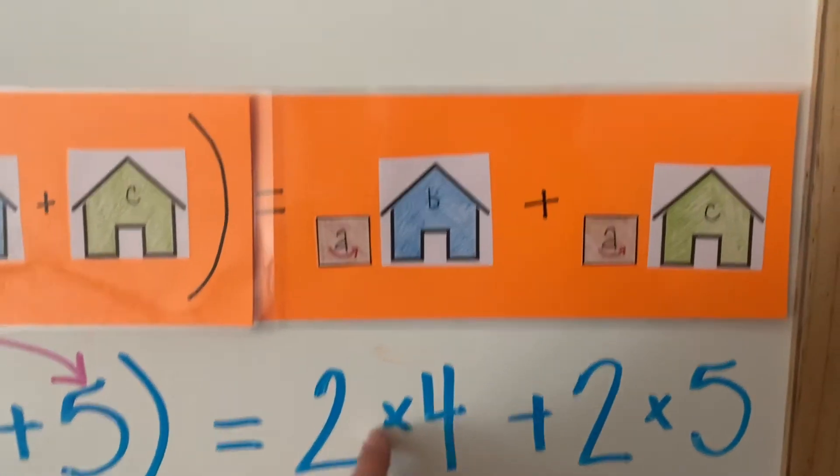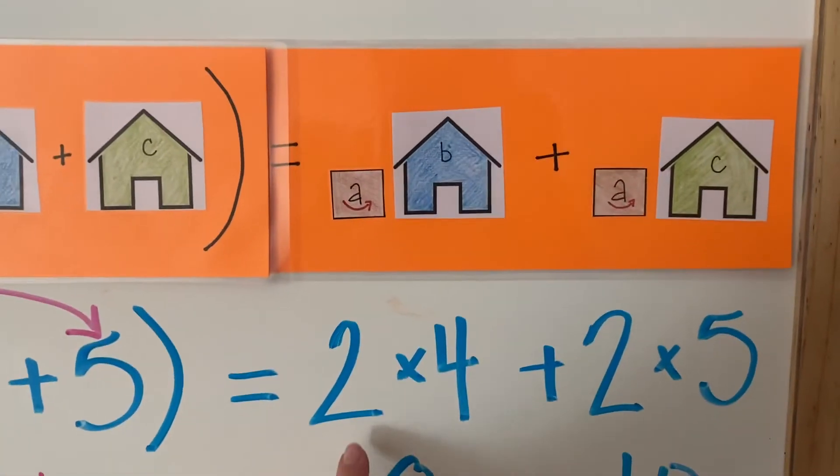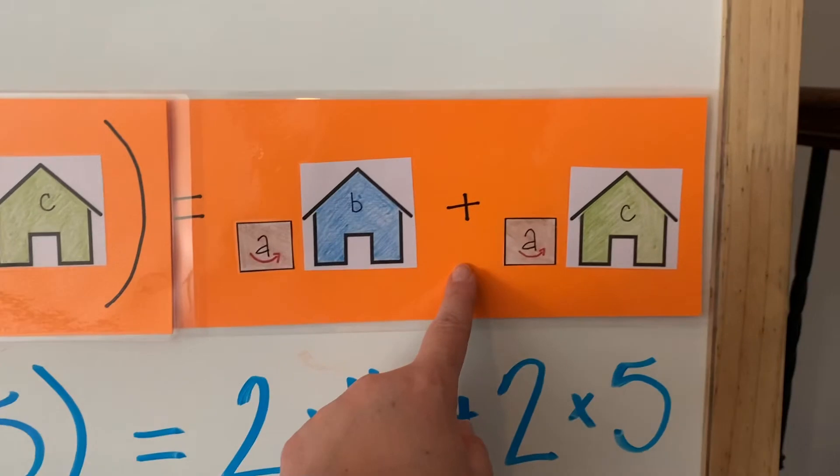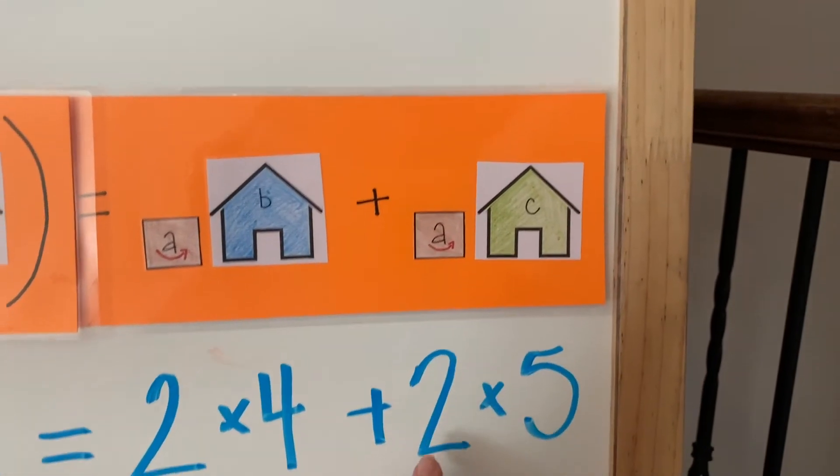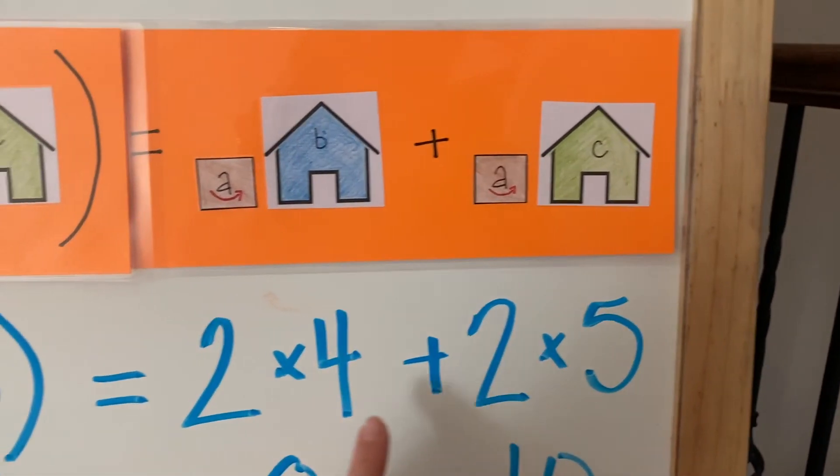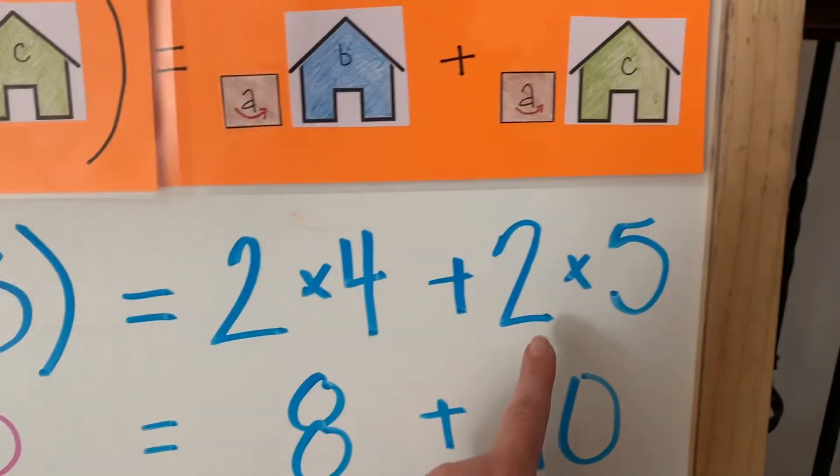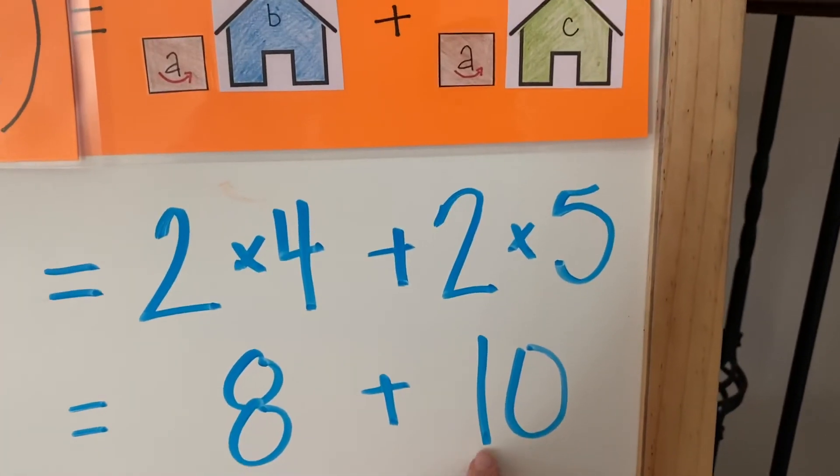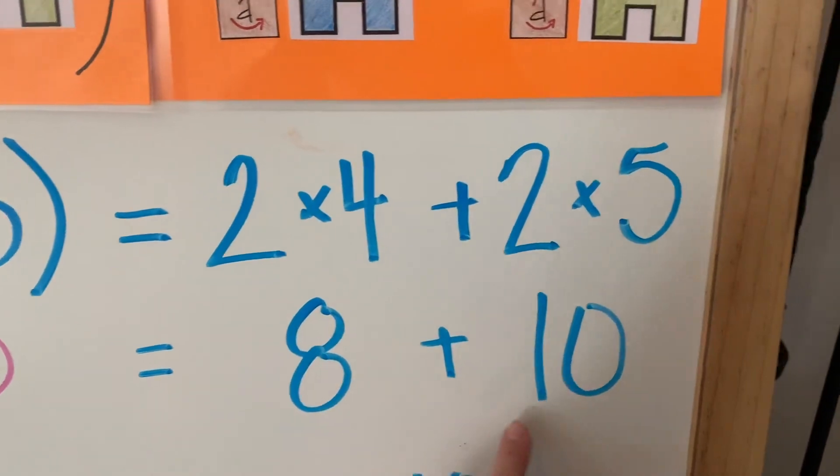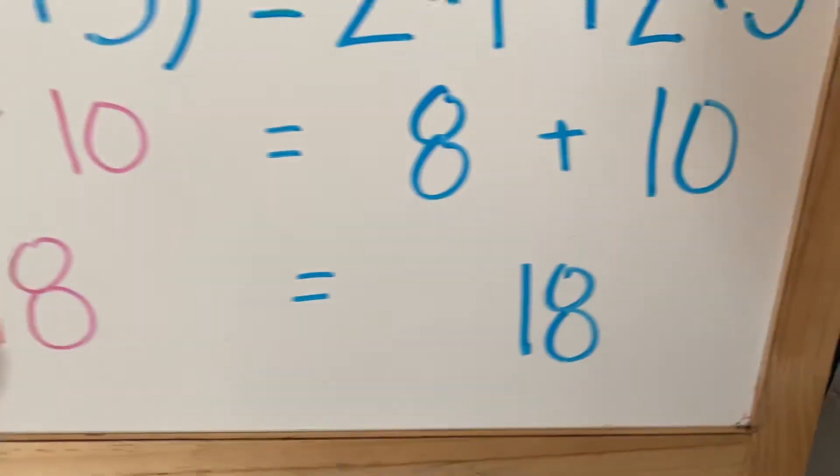The same thing, look here: a times b, which would be 2 times 4, plus a times c, which is 2 times 5. 2 times 4 is 8, 2 times 5 is 10, 8 plus 10 is 18.